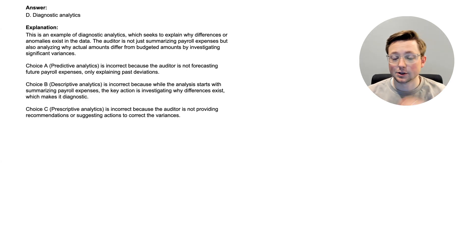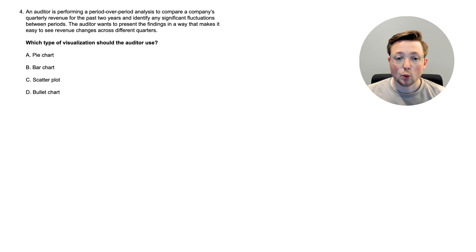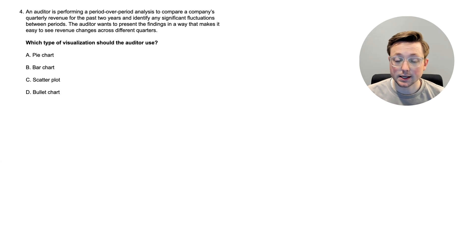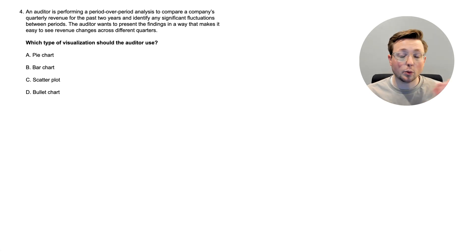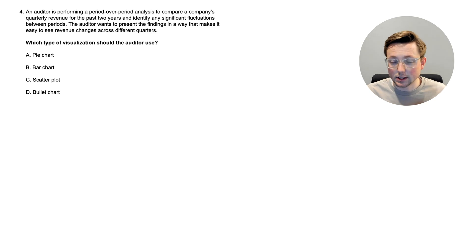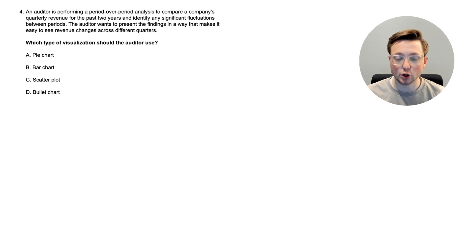Now let's go to question four. Which type of visualization should the auditor use? An auditor is performing a period-over-period analysis to compare a company's quarterly revenue for the past two years and identify any significant fluctuations between periods. The auditor wants to present the findings in a way that makes it easy to see revenue changes across different quarters. Is it A, a pie chart; B, a bar chart; C, a scatter plot; or D, a bullet chart? Pause the video, think through this, and come back when you're ready.